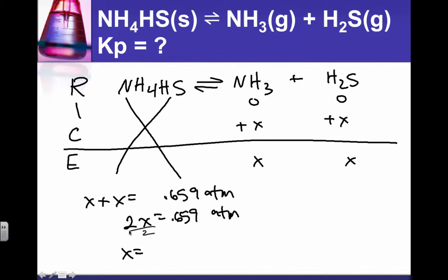So we divide both sides by 2 and I get 0.325 atmospheres. That's the value of X. So that means at equilibrium, the pressure of ammonia is equal to the pressure of the hydrogen sulfide, and that is equal to... let's see, how many sig figs do we get, 3 sig figs it looks like, so 0.330 atmospheres.